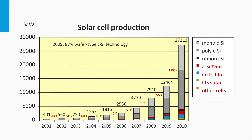Secondly, this graph shows how the various PV technologies contribute to the global module production. The grey colors represent the wafer-type crystalline silicon PV technology. As you can see, crystalline silicon PV technology is the dominant technology, contributing to around 90% of the total module production. The inorganic thin film PV technologies — like amorphous silicon, cadmium telluride, and CIGS — are responsible for the remaining 10%.